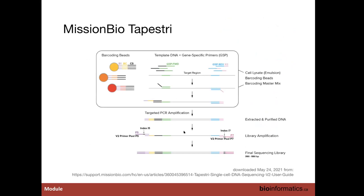The final type of single cell sequencing I'll mention is the Tapestri platform from Mission Bio, which now has a commercial platform with growing publications. This is also droplet-based: cells or nuclei are incorporated into oil droplets in an emulsion. Within those droplets, independently, we have distinct I5 and I7 barcodes, and together with gene-specific primers, we do a PCR to amplify specific genes and add cell-specific barcodes. This is a targeted approach requiring a panel design, but it can be very high throughput.